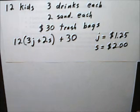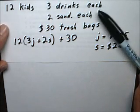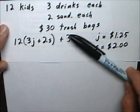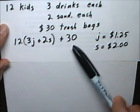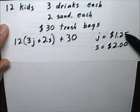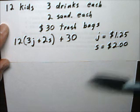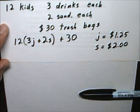I wrote 12 kids, three drinks each, two sandwiches each, $30 for trash bags. Here's the expression, and then they say the juice is $1.25 and the sandwich is $2.